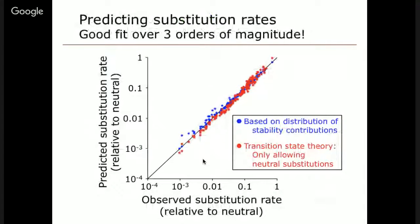With our model, we can count substitutions — we know exactly what the substitution rates are for all possible single-base-change substitutions. We calculated the rates based upon the distribution of stability contributions. Using transition state theory — the probability of being in the neutral zone times the neutral substitution rate — we get an extremely good fit of substitution rates over three orders of magnitude. This suggests that for our model, at least, the transition state theory approach is actually a very accurate way of calculating substitution rates from first principles.